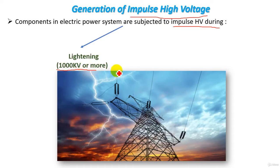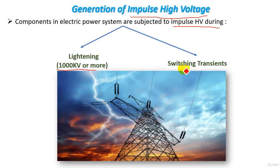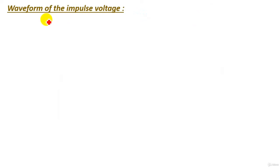Impulse high voltage can also result from switching transients due to loads being connected and disconnected from the electric power system. This type is very important to understand, and we should be able to generate it in our high voltage labs — essentially generating a lightning stroke in the lab.